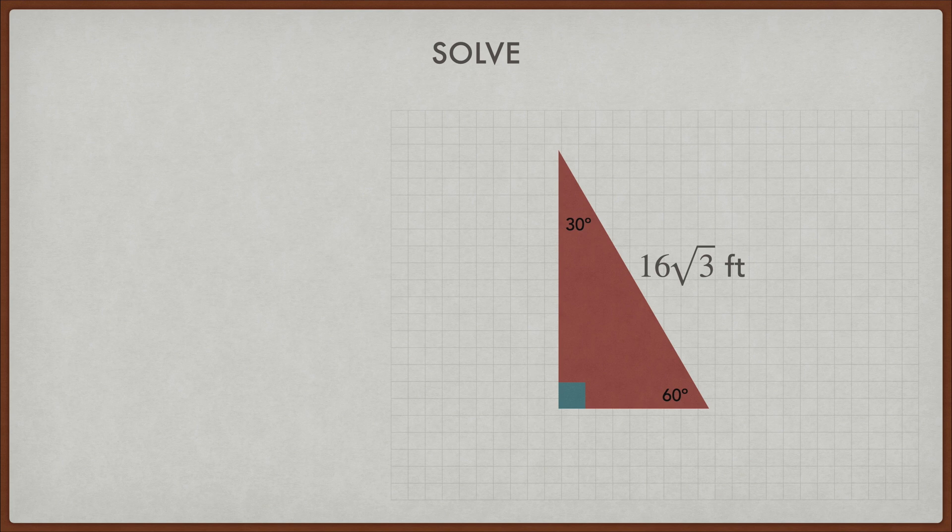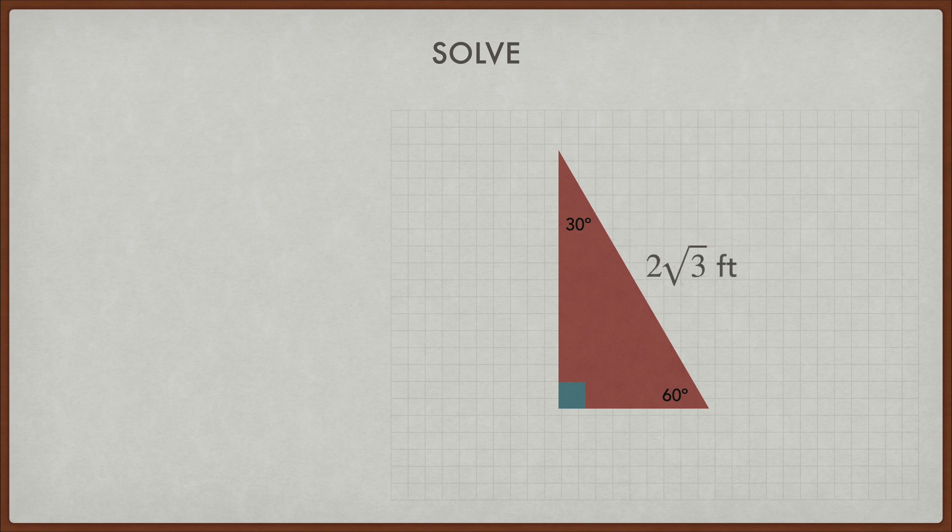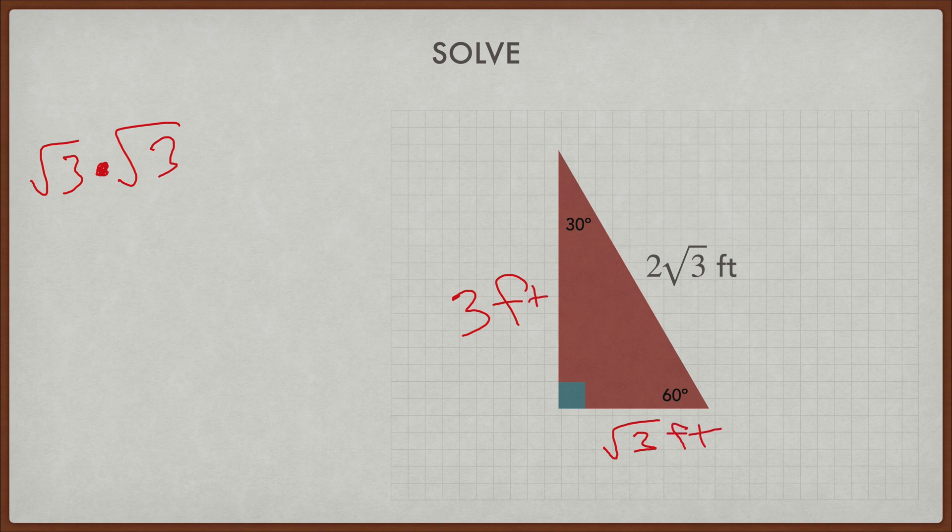Alright, 16 square root of 3. So to get the short leg, which is what I always want, I have to divide by 2. 16 divided by 2 is 8. We don't change the square root of 3. And then 8 square roots of 3 times the square root of 3 becomes 8 times 3 or 24 feet. 16 divided by 2 times the square root of 3. So to find our long leg, 16 divided by 2 times the square root of 3 times the square root of 3 just becomes 3 feet. There we go.